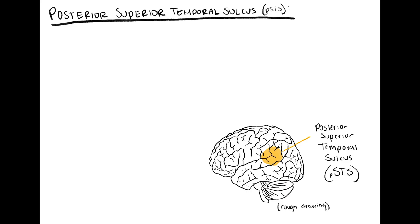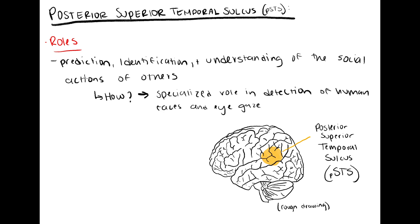More commonly referred to as the PSTS. The PSTS plays a key role in the prediction, identification, and understanding of the social actions of others. It does so through its specialized role in the detection of human faces and eye gaze.